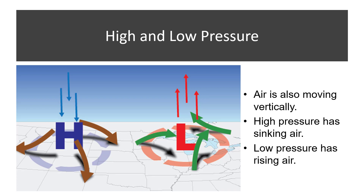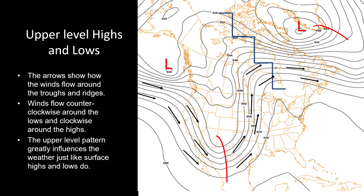In addition to winds rotating around the high or low pressure center, air is also moving vertically. High pressure has sinking air and low pressure has rising air. That is happening near the surface. If we go higher in the atmosphere, something similar is happening.